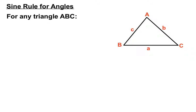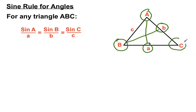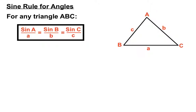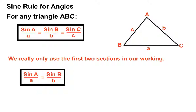For any triangle ABC, the sine rule for angles states that sine of angle A over side a equals the sine of angle B over its opposite side, and the sine of angle C over its opposite side. So those ratios of sine over the opposite side are exactly the same in each of the pairs. For our calculations though, we only really use the first two sections: sine A over a equals sine B over b.